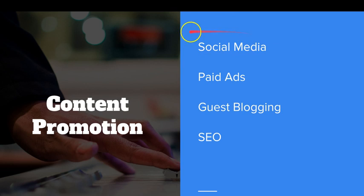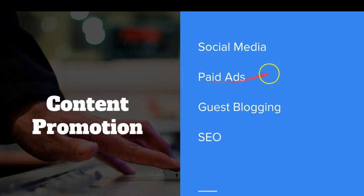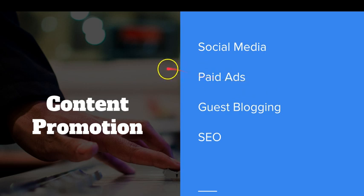If you want quick results, SEO should be your long-term plan while you use one of the other three methods as a short-term plan to keep you going. First, sign up on social media — Twitter, Facebook — create an account, and whenever you publish a new post, share it there. Follow people in your industry, retweet, establish relationships. Paid ads are for people that have money — you can spend around $100 or so promoting a post, get traffic, and convert visitors.